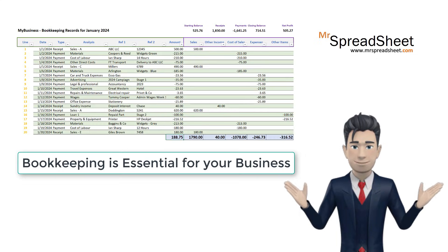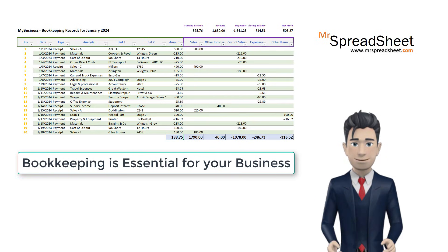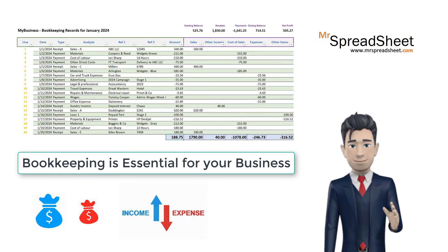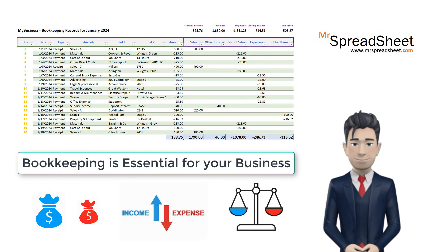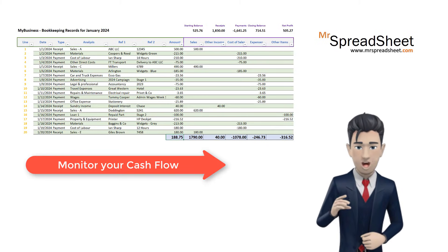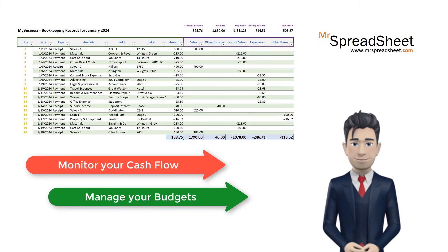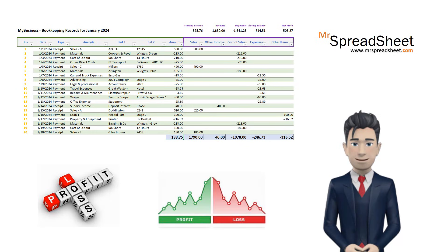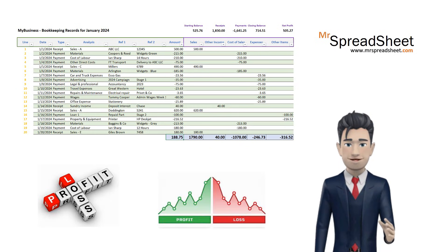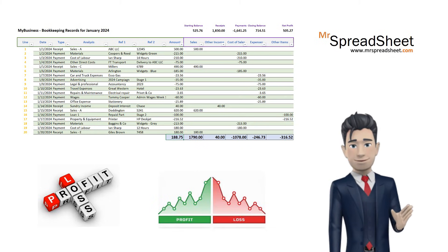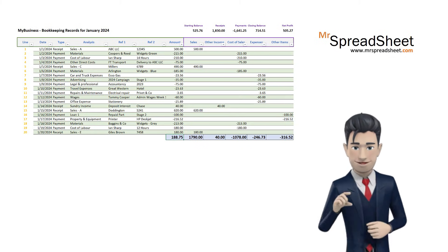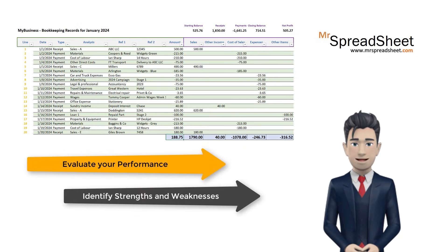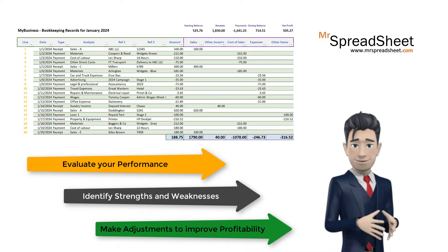Accurate and timely bookkeeping is essential for all small businesses to help you see how much money you are earning and how much money you are spending from your business activities. In this way you can monitor your cash flow, manage your budgets, and plan for your future needs. With good bookkeeping practices you can see how well your business is doing and how much profit or loss you are making. This helps you evaluate your performance, identify strengths and weaknesses, and make adjustments to improve profitability.